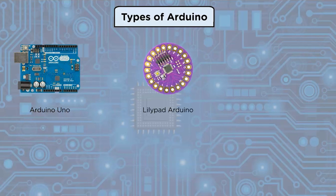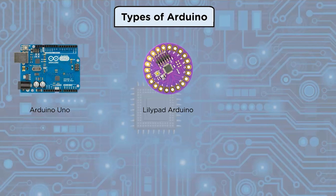Next we have LilyPad Arduino. LilyPad is a wearable e-textile device created by Lee and designed in collaboration with SparkFun. Each LilyPad was cleverly constructed with large connection pads and a flat back to sew conductive thread into garments. The LilyPad features its own set of input/output, power, and sensor boards designed exclusively for e-textiles and can even be washed.